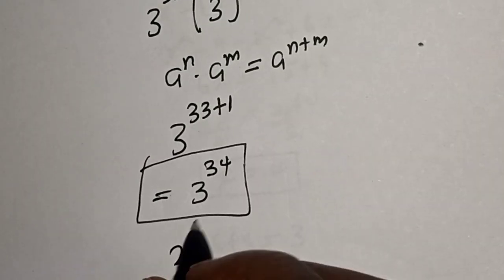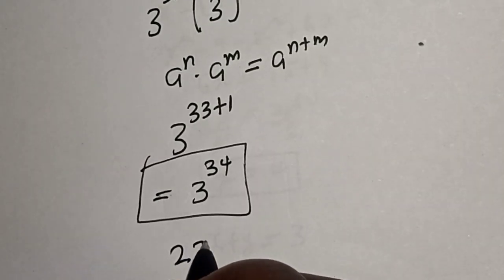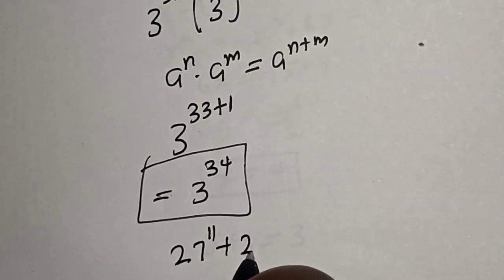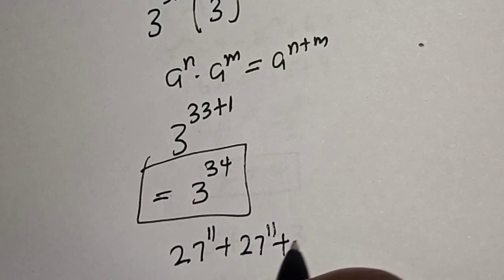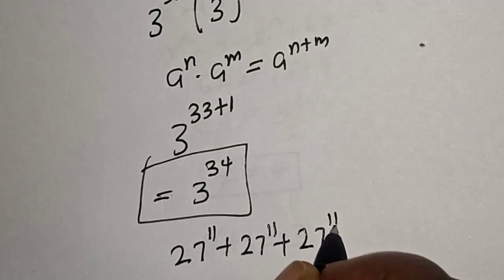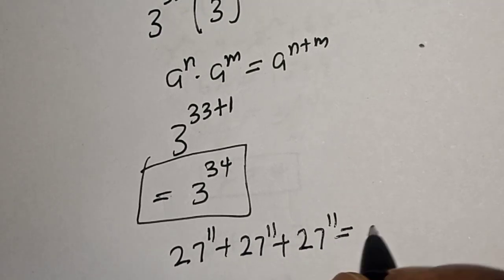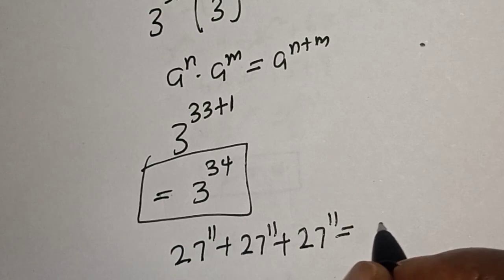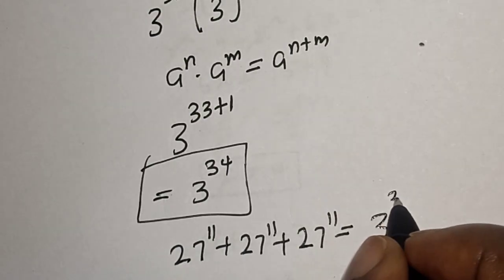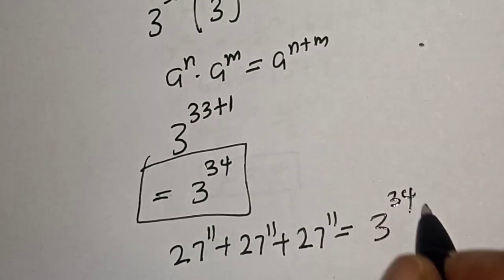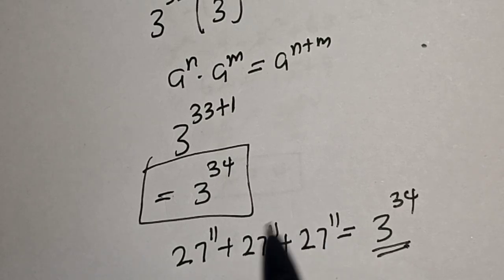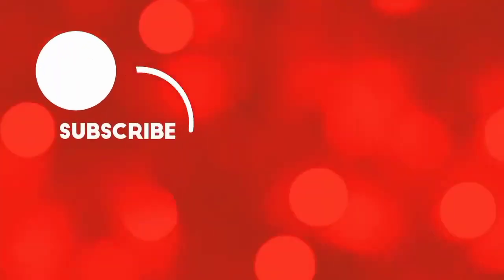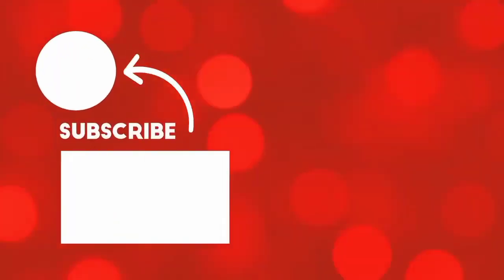Therefore, 27 raised to power 11 plus 27 raised to power 11 plus 27 raised to power 11 is equal to 3 raised to power 34. If you enjoyed the class, please don't forget to like, share, comment and subscribe. Thank you.